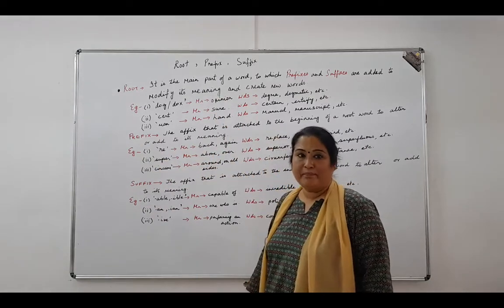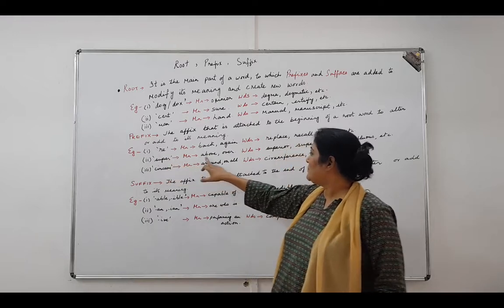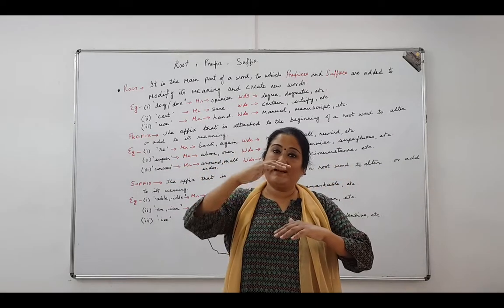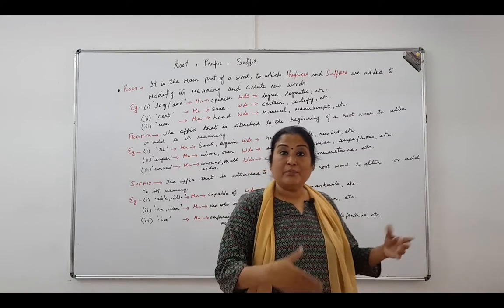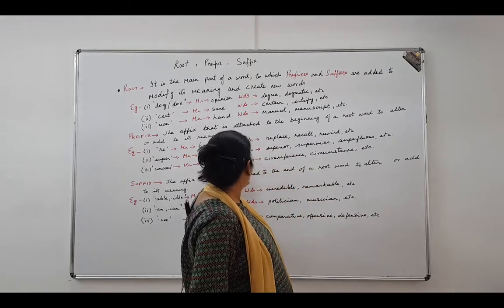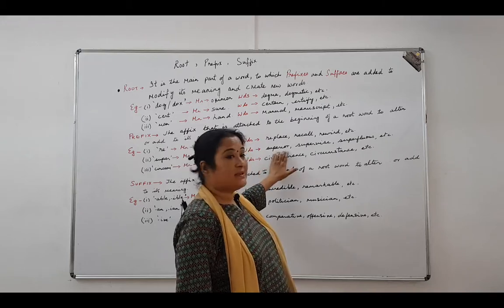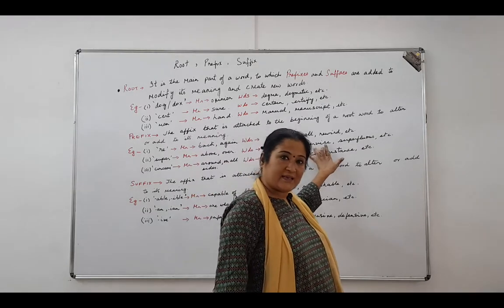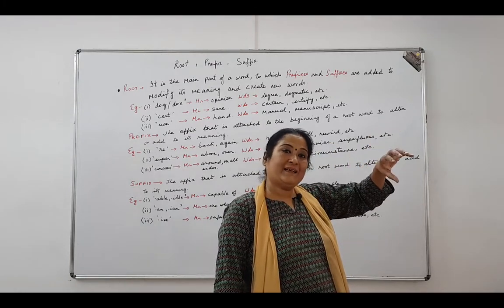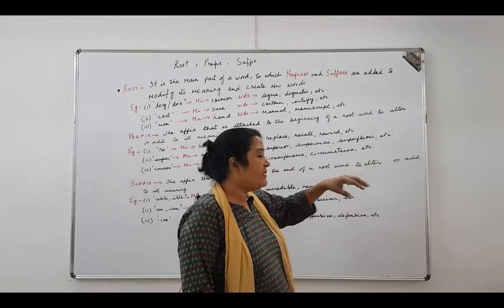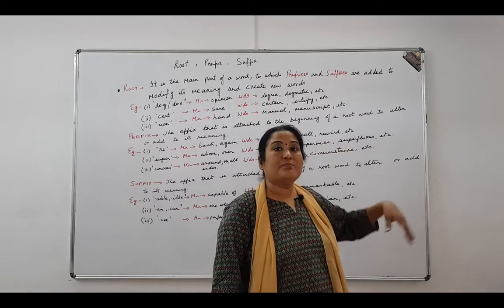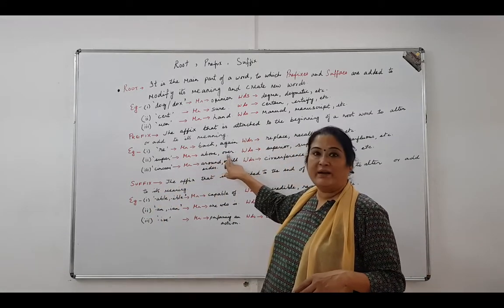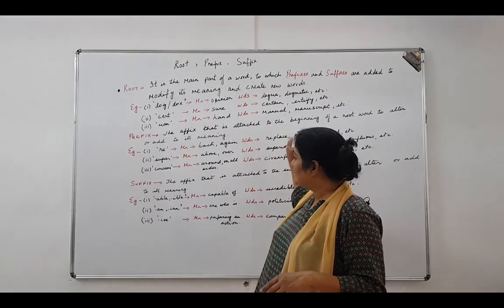The second prefix is 'super', which means above or over — in rank, in hierarchy, or in terms of excess. The words we have: 'superior' is a person of higher authority. 'Supervise' means observing and directing the execution of a task. 'Superfluous' means more than necessary — so if you have more than what is needed, it is superfluous.